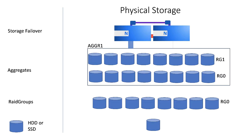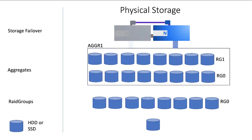For example, if you bring down a node, the aggregate will automatically failover to its partner. This is called storage failover. When you run out of space in an aggregate, the aggregate can be grown by adding drives to the aggregate. A very important remark: you may never shrink the aggregate. That is impossible. So be very careful when adding disks to an existing aggregate, because you will never be able to remove them unless you destroy the aggregate.